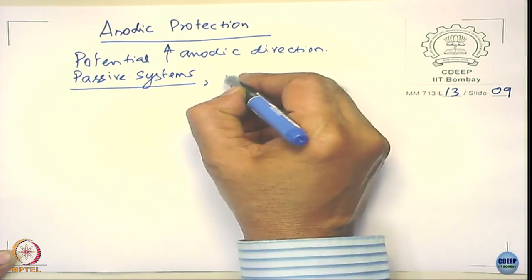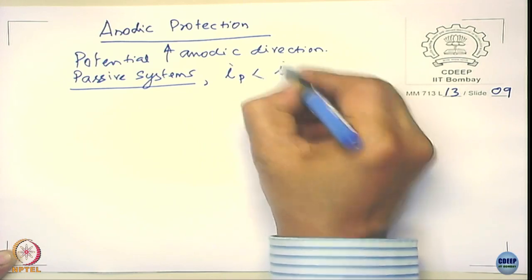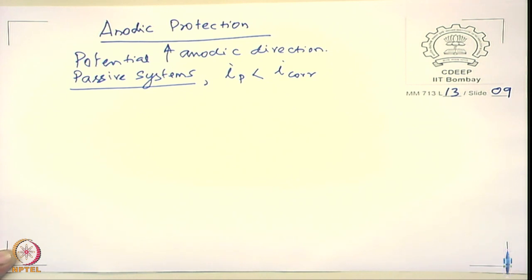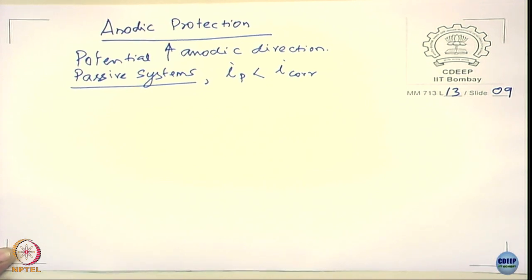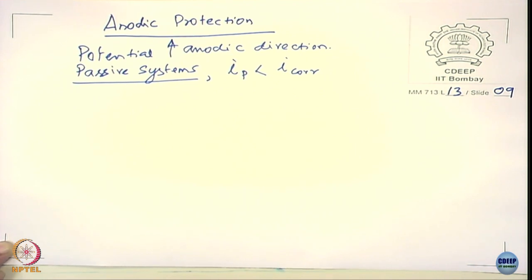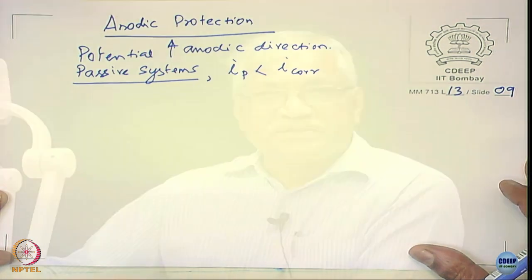For anodic protection to work, the system must be passive. Additionally, I_passivation must be lower than I_cor — otherwise there is no benefit. If I_cor is smaller than I_p, anodic protection will not help. Let us look at the Evans diagram for a passive system to see how anodic protection works.